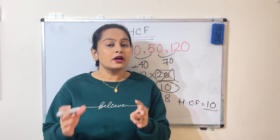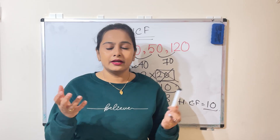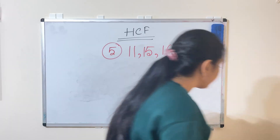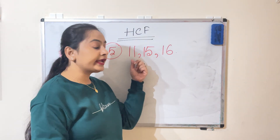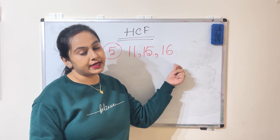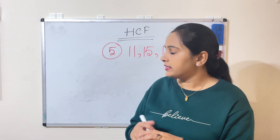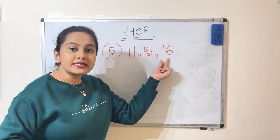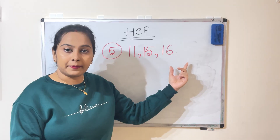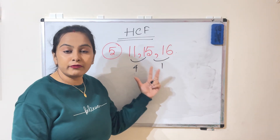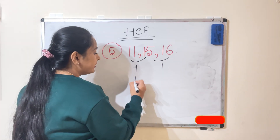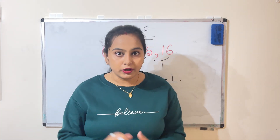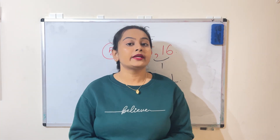One more method: in our fifth example, the numbers are 11, 15, and 16. If you observe these numbers, you can easily tell they are co-prime numbers — there are no common factors among them. When we have co-prime numbers, the HCF is always 1. Hope all of you enjoyed today's class. See you in the next class, bye!